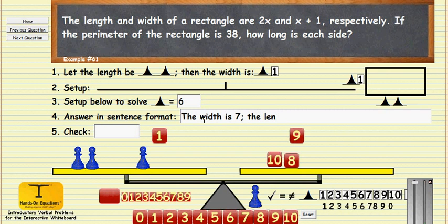And the length, which is twice the pawn, would be 12. The length is 12.